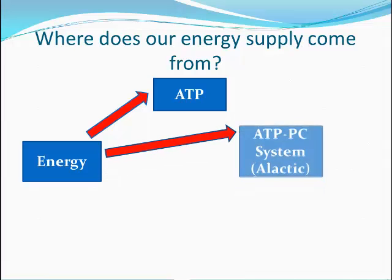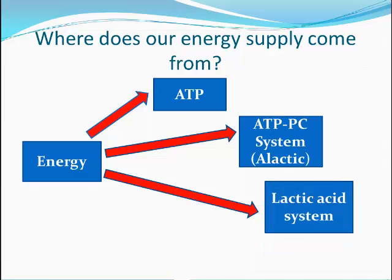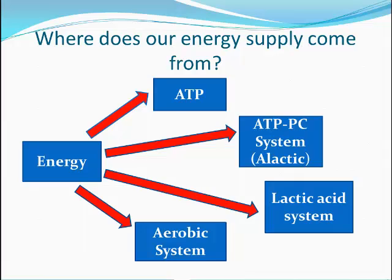The three energy systems are: the ATP-PC system, or the alactic energy system, which is predominantly used by a 100m sprinter; the lactic acid system, which is predominantly used by a 400m runner; and finally the aerobic system, which is an energy system that a marathon runner would predominantly use.